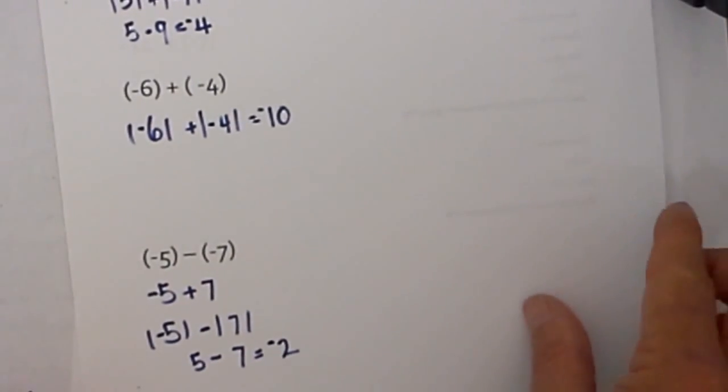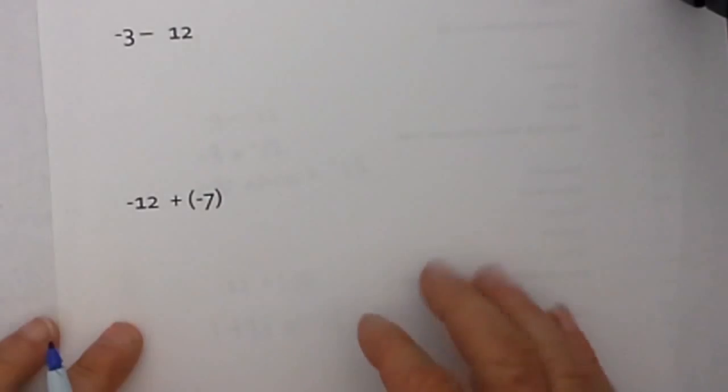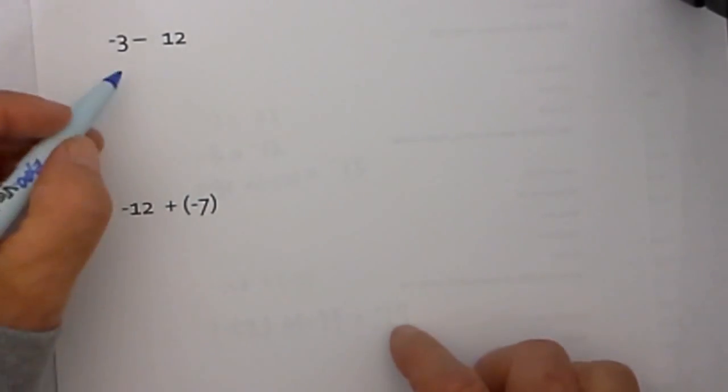Let's work two more examples and see how we are doing here. Next up we have negative 3 minus 12. Is the problem addition? No. So we will change the sign.